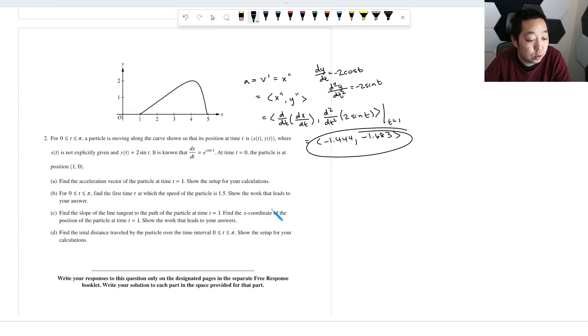Find the first time on which the speed of the particle is 1.5. Show the work that leads to your answer. So we want the speed, which is the magnitude of the velocity vector, to equal 1.5. Okay, so how do we get the velocity vector? That's basically the derivative: x prime squared plus y prime squared. You take the velocity vector and do Pythagorean theorem for that. So that's gonna be square root, x prime we know is e cosine of t.